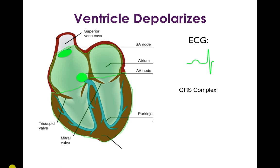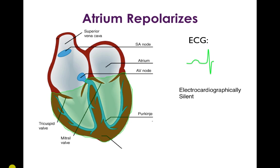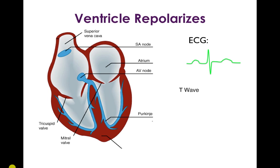Next, the ventricle depolarizes, leading to a QRS complex on the EKG — in normal conduction this is quite narrow because the Purkinje fibers conduct the electrical impulse through specialized tissue very rapidly across the entire ventricle, leading to depolarization of the whole ventricle within about 100 milliseconds. The atrium then repolarizes, which is electrically silent, buried somewhere in the QRS complex. The ventricles then repolarize, which is seen as the T wave on the electrocardiogram.